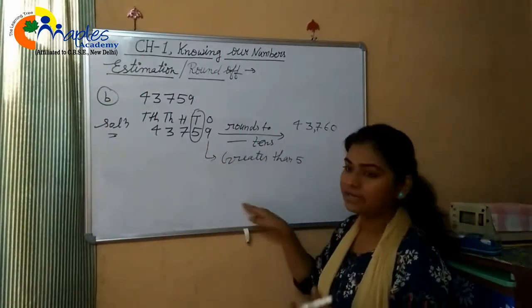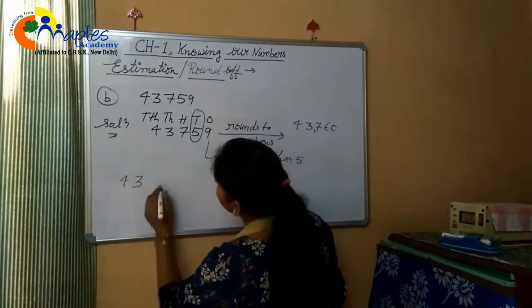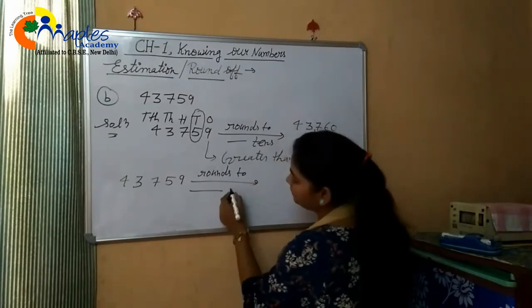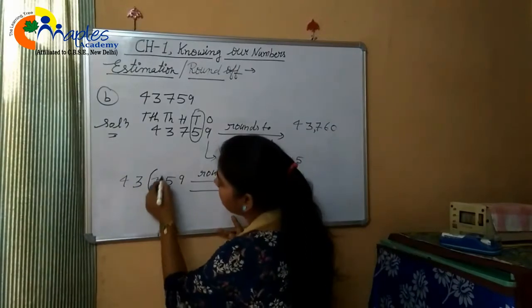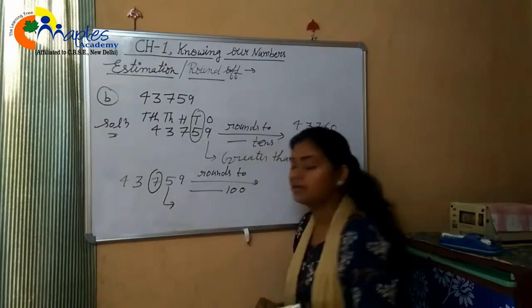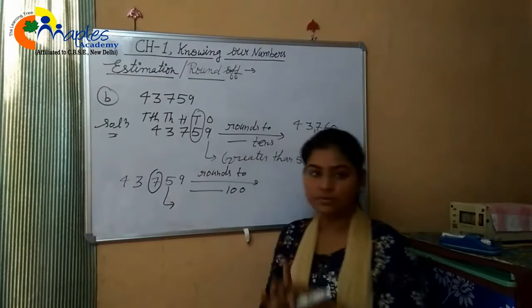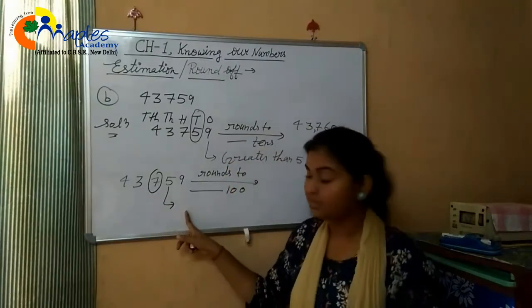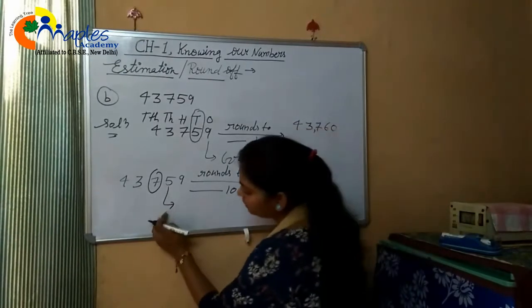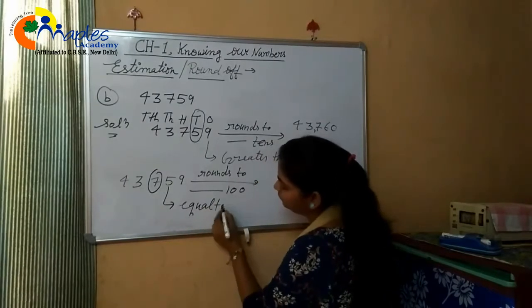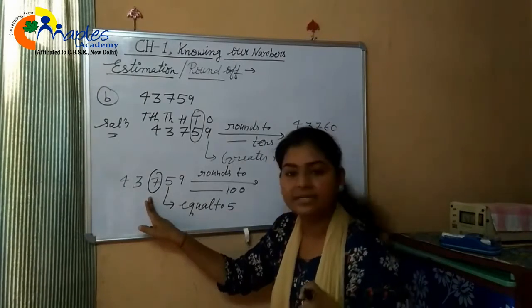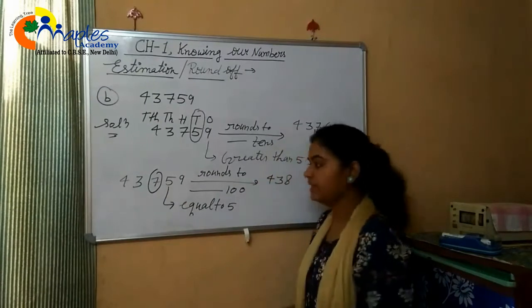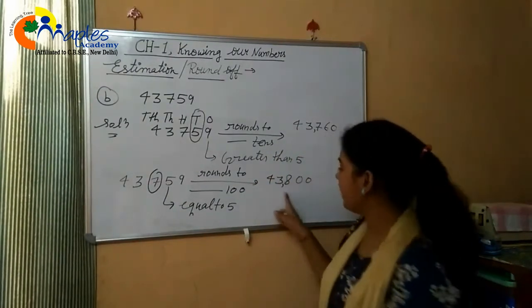Same number 43,759 — we round off to the nearest 100. The hundreds place is 7; we check the digit just before it, which is 5. Since it is equal to 5 — and equal to 5 or greater than 5 means we add 1 to the nearest place digit — 7 plus 1 equals 8, and the remaining digits become zeros. So the number is 43,800.